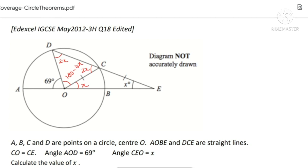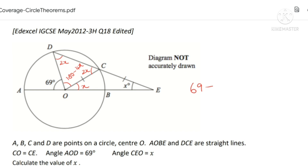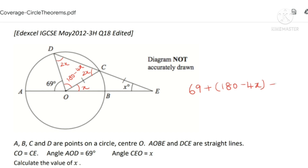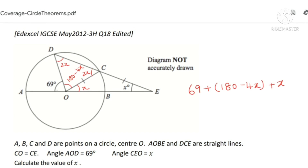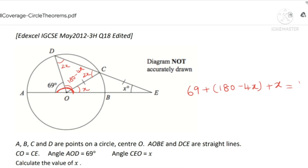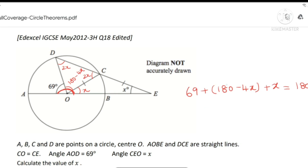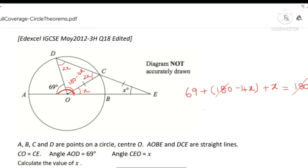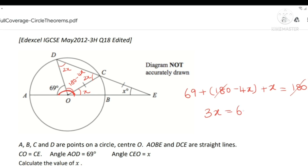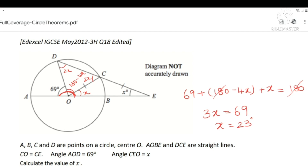So this angle is 180 minus 4X. Therefore, 69 plus 180 minus 4X plus X is equal to 180, because they form a straight line. It is also given that AOBE is a straight line, so it is 180 degrees. Using this equation we can solve for X. We have 3X is equal to 69, so X is equal to 23 degrees.